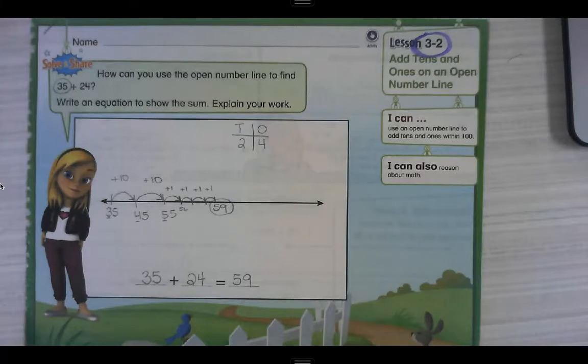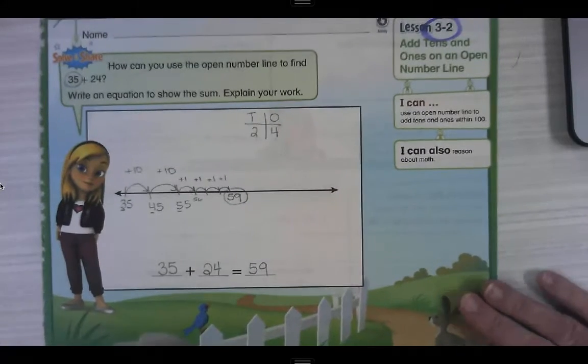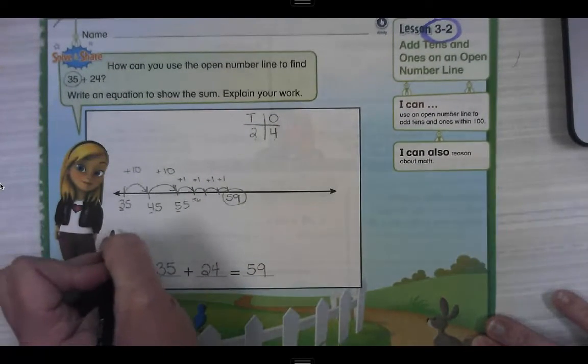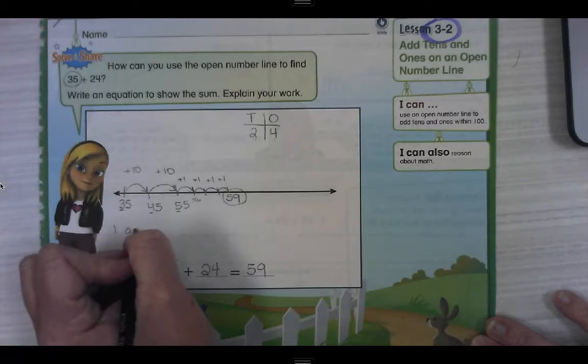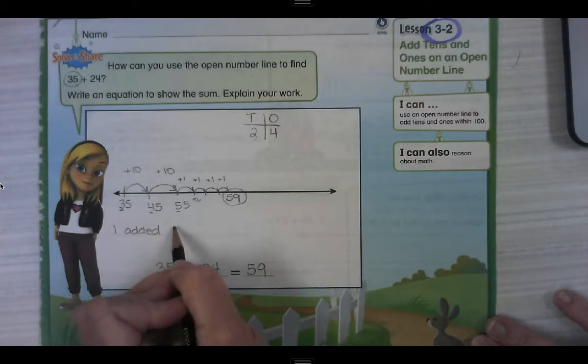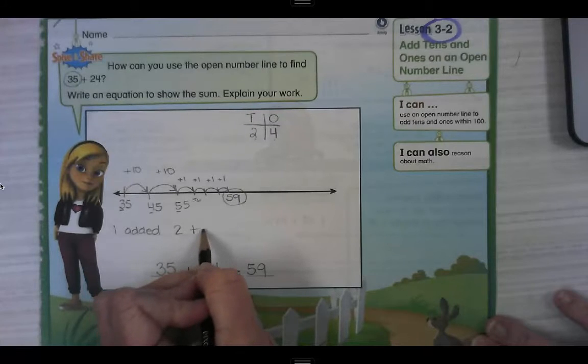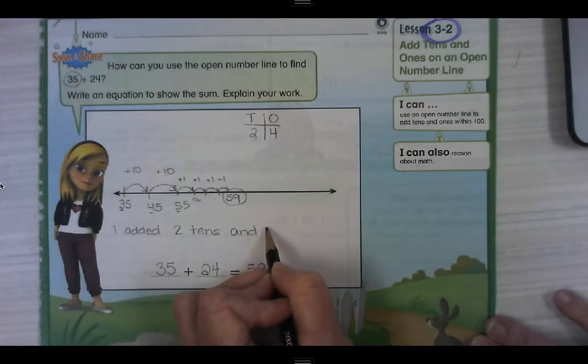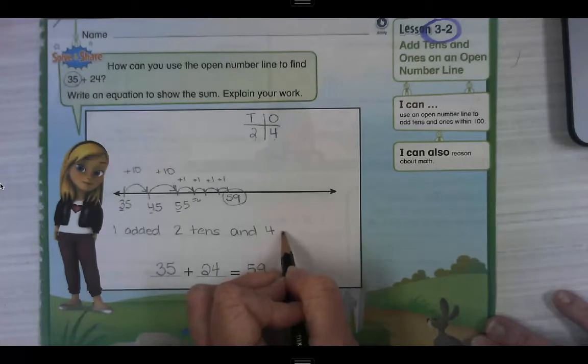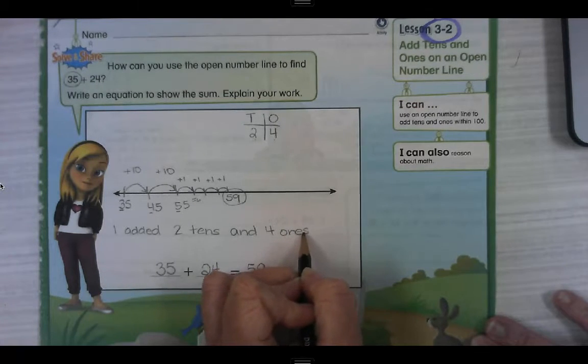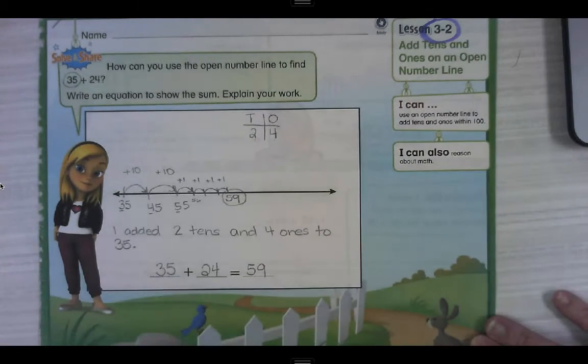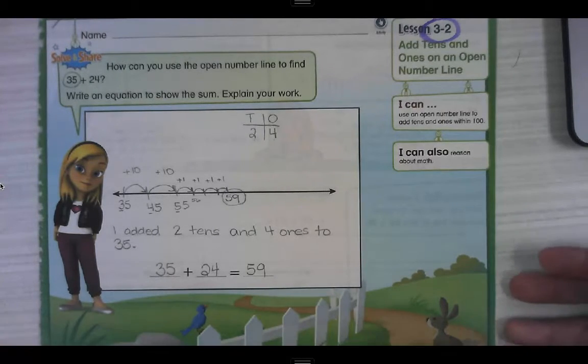If we write an equation, we started with 35 and we added two tens and four ones, which is 24. And our sum was 59. Okay. And we can explain our work. Really, our work right here explains itself. We could say, I added two tens and what else? Four ones to 35. All right. That's not too bad, right? Let's keep going.